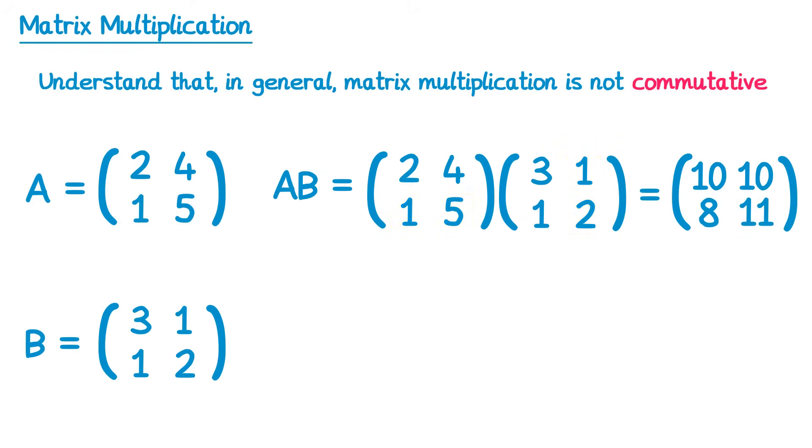Now what if we reverse the order? This time we'll do BA. So we'll start with matrix B, and multiply by matrix A. Again, this will give us a 2x2 matrix. So we'll do 3 times 2, which is 6, and 1 times 1 is 1, and 6 add 1 gives you 7. Then 3 times 4 is 12, and 1 times 5 is 5. Add 12 and 5, you get 17. Then 1 times 2, which is 2. And 2 times 1, which is also 2. So 2 add 2 is 4. And finally, 1 times 4 is 4, and 2 times 5 is 10. 4 add 10 is 14.